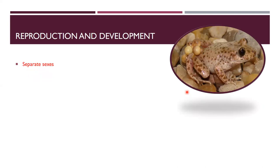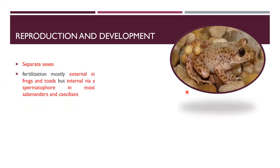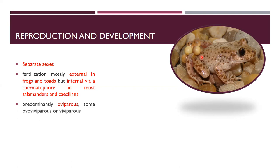Amphibians are dioecious — their sexes are separate, with separate males and females. Fertilization is mostly external in frogs and toads — sperm is released into water to fertilize the female's eggs. But fertilization is internal by spermatophore in salamanders and caecilians. Predominantly, amphibians are oviparous (egg-laying organisms), though some are ovoviviparous and some are viviparous, giving birth to young ones.